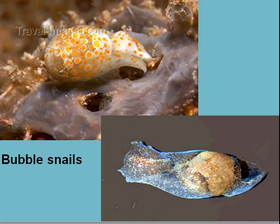Sometimes you see these things with their jelly-like egg masses laid on seaweeds growing on the surface of the mud — big, bubbly, goopy, soupy egg masses.